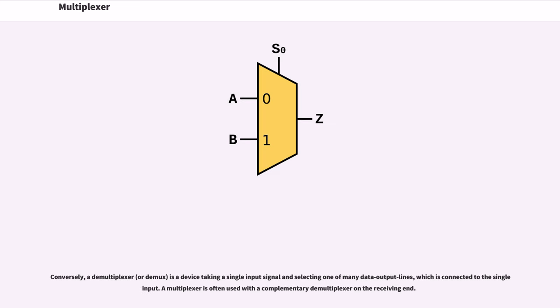Conversely, a demultiplexer is a device taking a single input signal and selecting one of many data output lines, which is connected to the single input. A multiplexer is often used with a complementary demultiplexer on the receiving end.